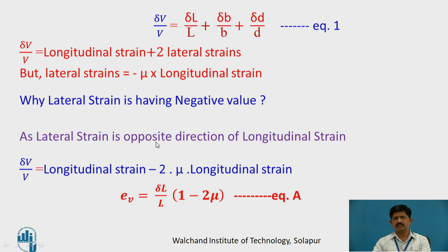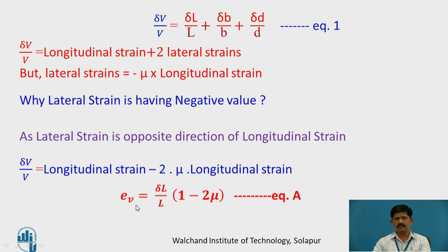As the lateral strain is in the opposite direction to longitudinal strain, we have the negative value. So delta V by V equals delta L by L (longitudinal strain) plus delta B by B and delta D by D (lateral strains), giving minus 2 times mu into longitudinal strain. Taking delta L by L common, Ev (volumetric strain) equals delta L by L into (1 minus 2·mu). This is the volumetric strain when force is applied in the direction of the length.